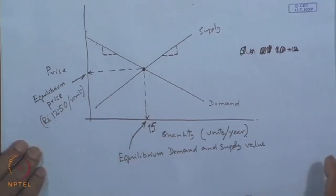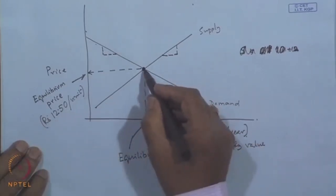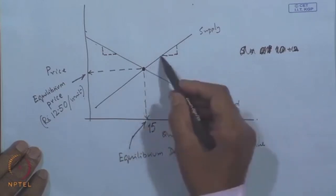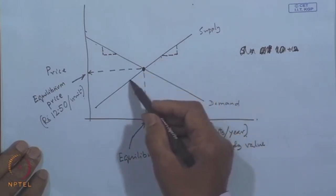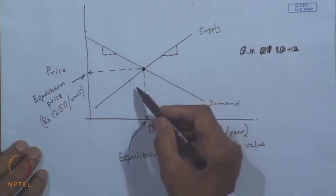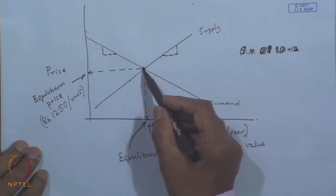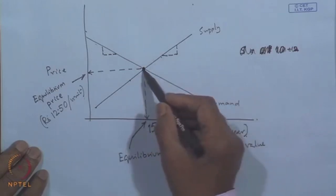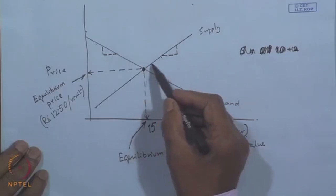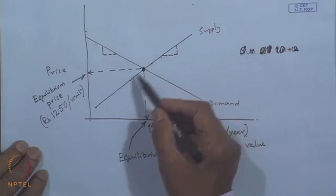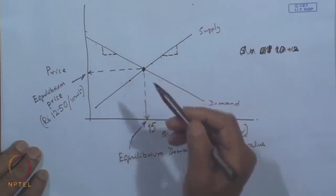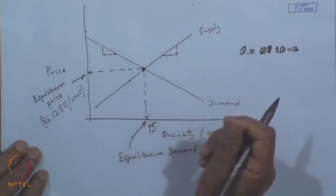In our next class we shall show how, when there is excess supply or supply scarcity, the market is made to negate those changes and brings back supply to its equilibrium condition, rather than continue to operate in an excess or scarcity situation. Thank you very much.